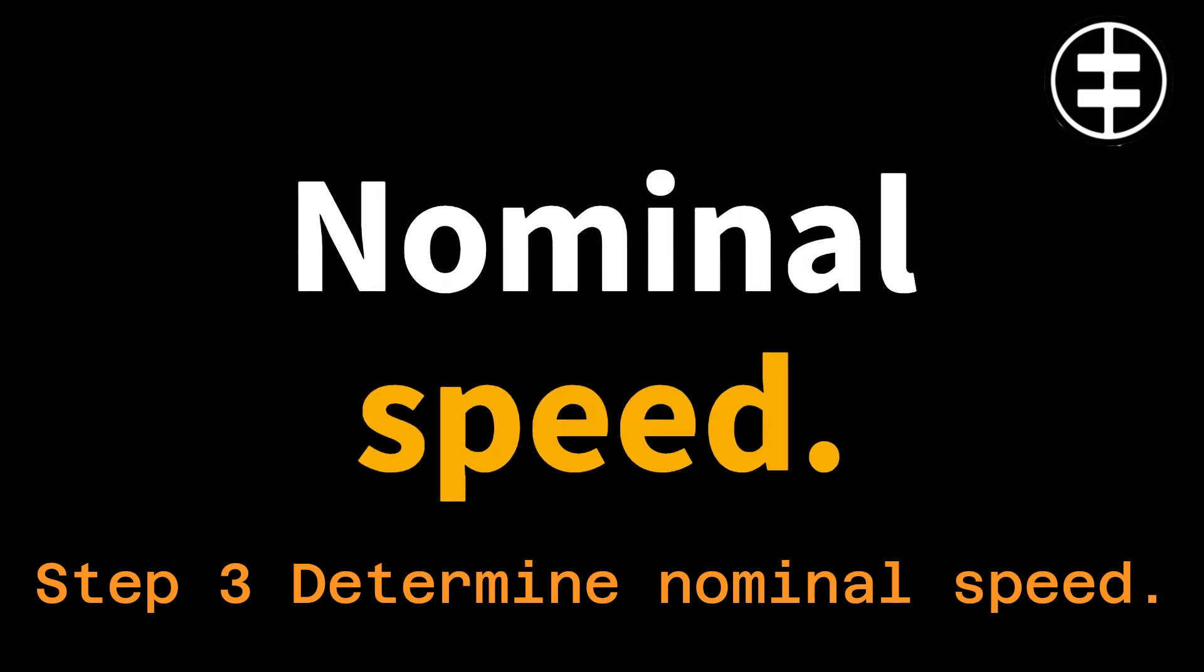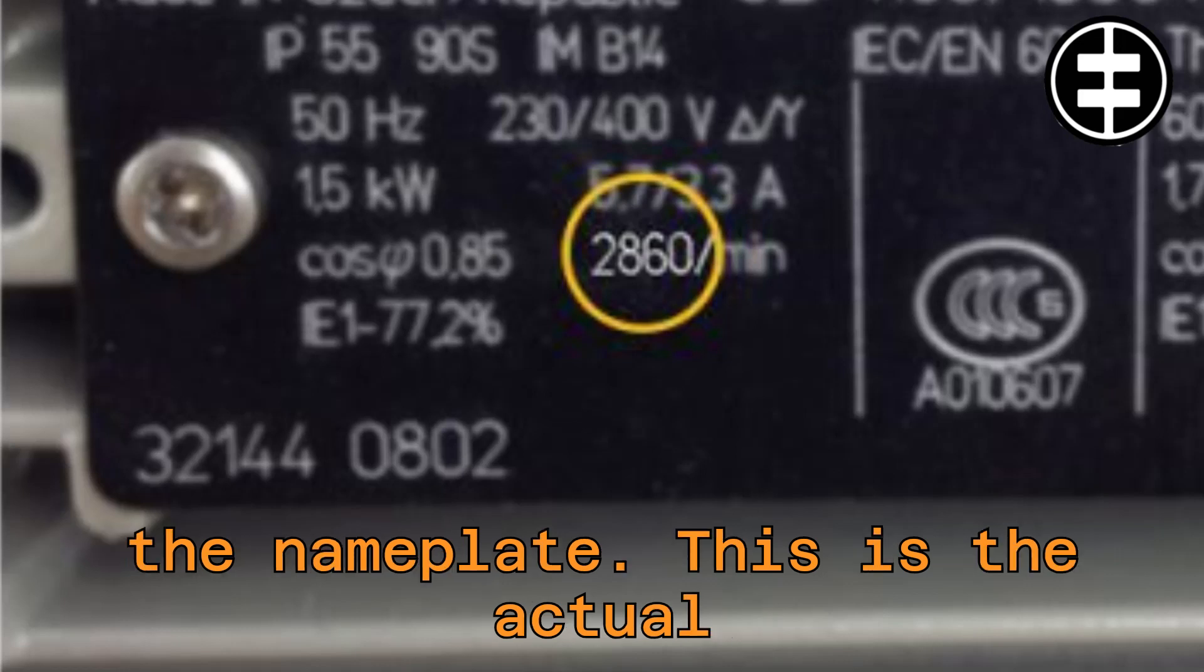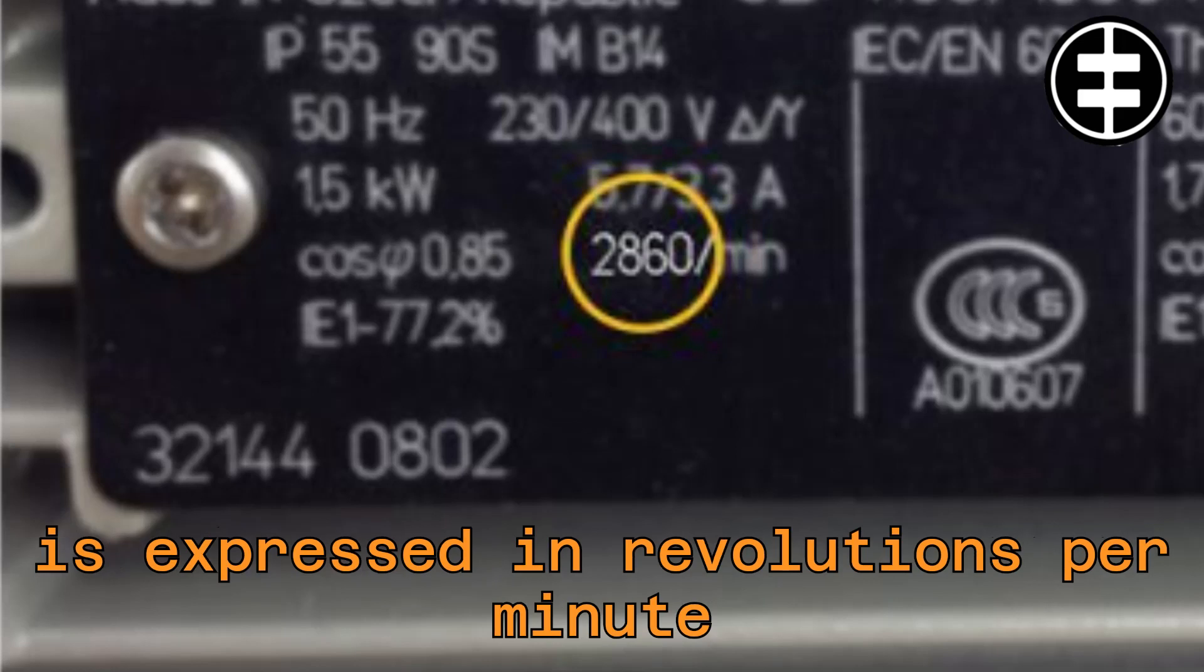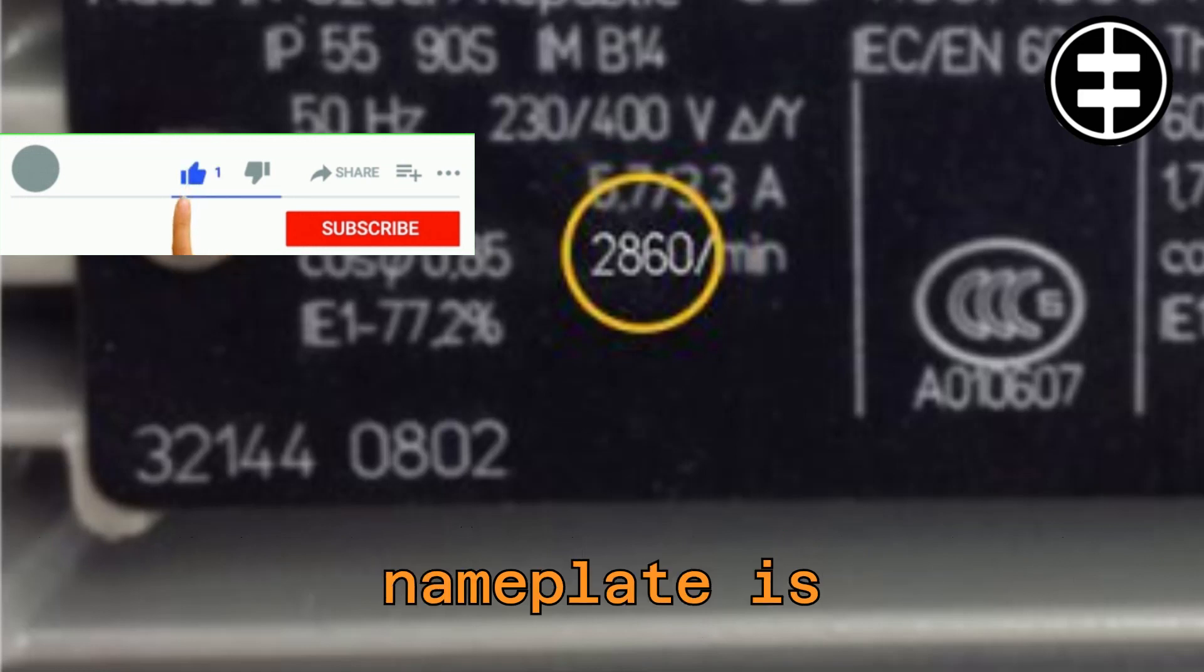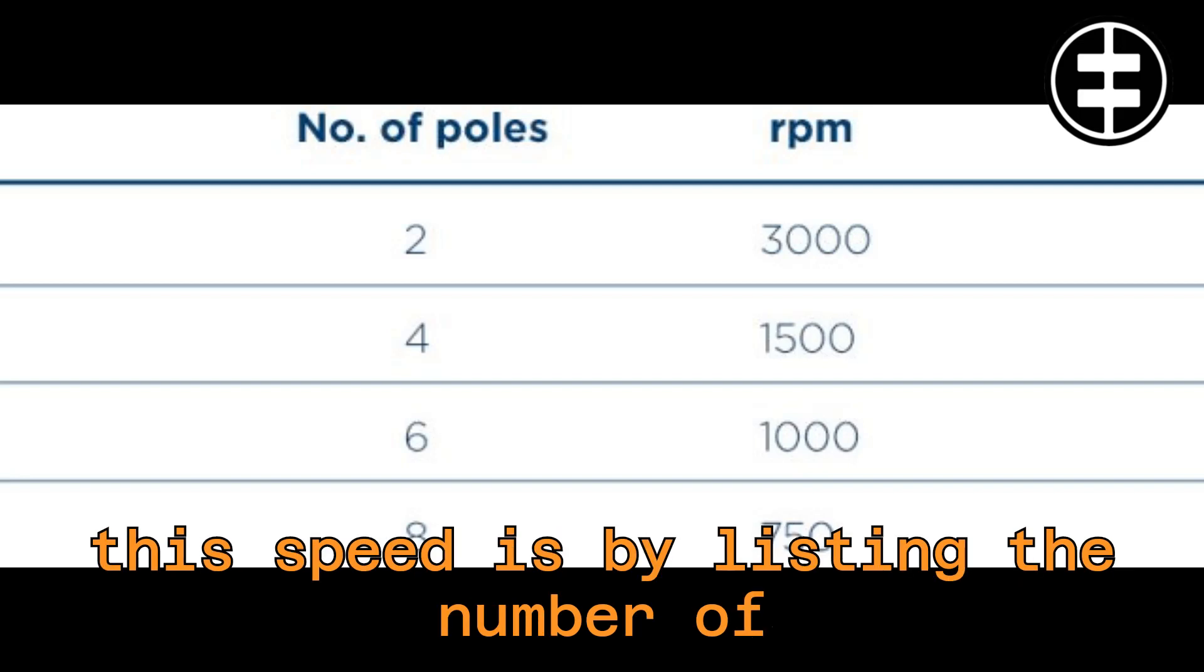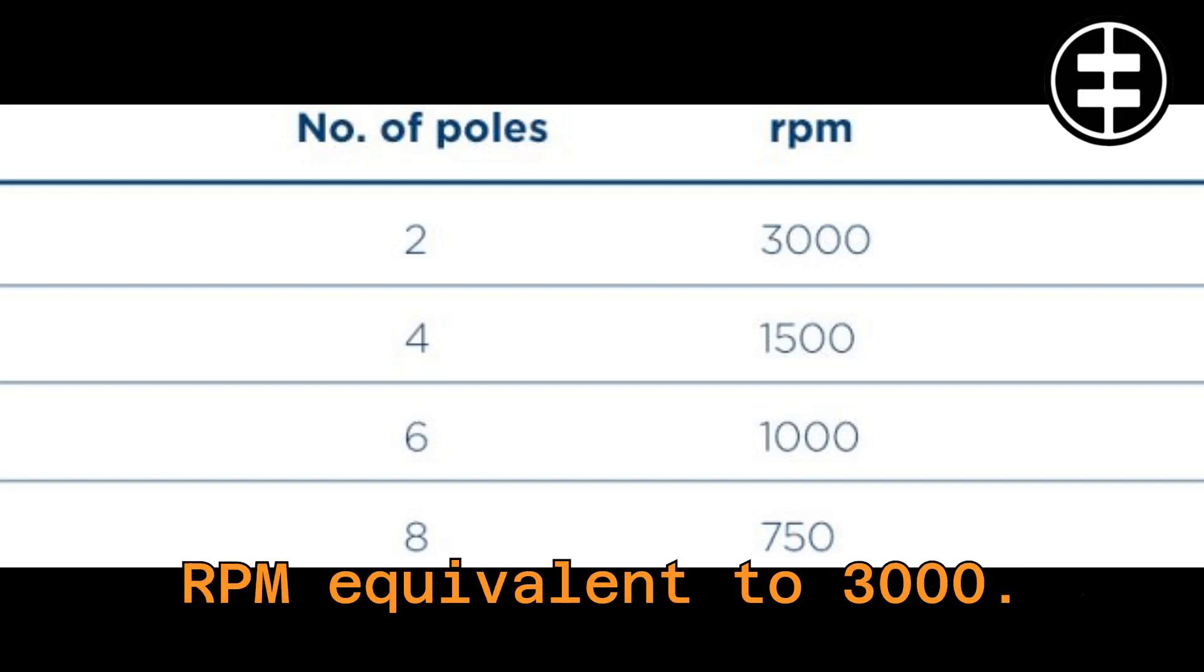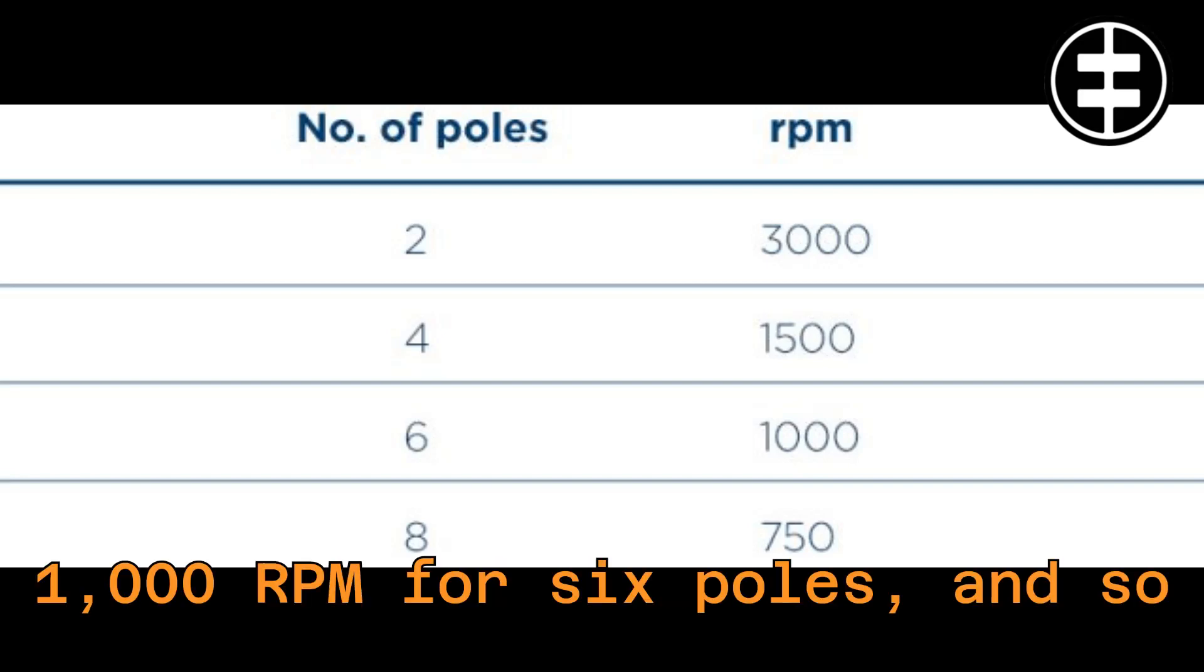Determine nominal speed. The nominal speed is usually stated on the nameplate. This is the actual rotational speed of the output shaft and is expressed in revolutions per minute, or RPM. The RPM on our nameplate is 2,860 revolutions per minute. An alternative way of expressing this speed is by listing the number of poles. A two-pole motor has an RPM equivalent to 3,000. For four poles, this is 1,500 RPM, 1,000 RPM for six poles, and so on.